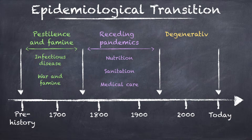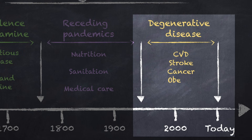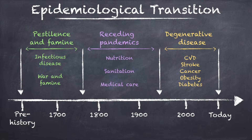Phase three: degenerative disease. As of the middle of the 20th century, vaccines, antibiotics, and improvements in the social determinants of health increased life expectancy, and with that came an increase in diseases prevalent among the elderly — things like heart disease, stroke, cancer, and other chronic diseases. A more sedentary lifestyle together with dietary changes has also contributed to an increase in obesity, itself a risk factor for diabetes, heart disease, and cancer.